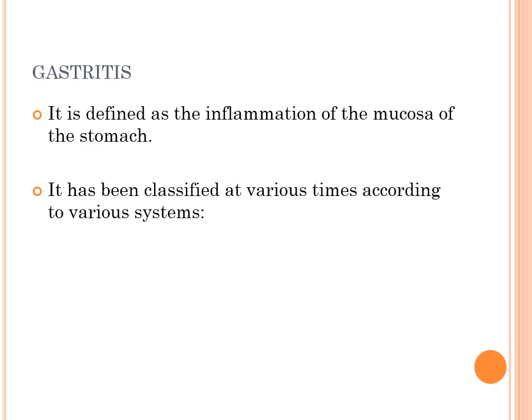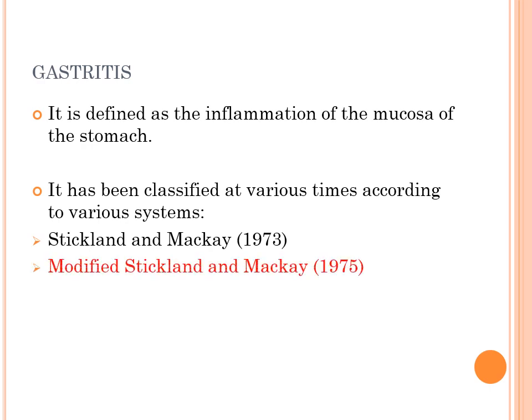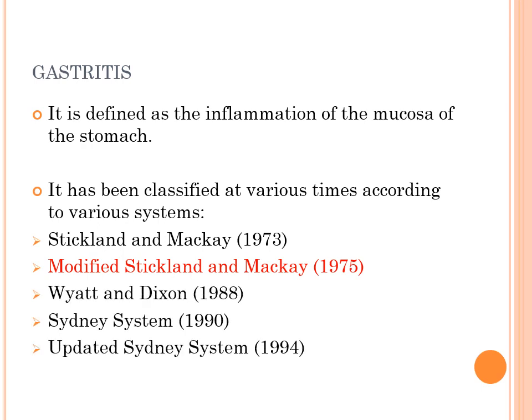Gastritis has been classified at various times according to various systems. It started with Strickland and Mackay in 1973, then was modified in 1975, followed by other classifications by Watt and Dixon in 1988, then the Sydney system in 1990, which was updated again in 1994. We will stick to a simplified version of the classification given by Strickland and Mackay, further modified in 1975.